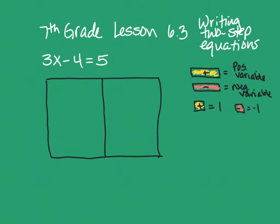So they start off by showing us how to model a two-step equation. And we use algebra tiles for that. And so when we're using algebra tiles, the long bar, the yellow long bar is a positive x. And the long bar, positive variable x.